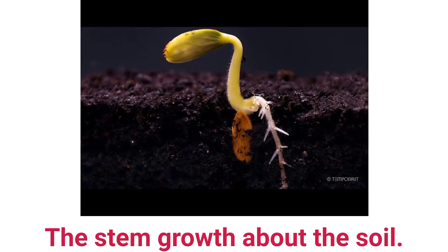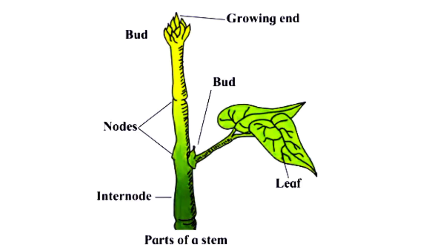Next, we see the parts of the stem. The stem grows above the soil. The sprouting seeds produce plumule, and from the plumule the stem grows. As the sprout grows, the length of the stem gradually increases too.